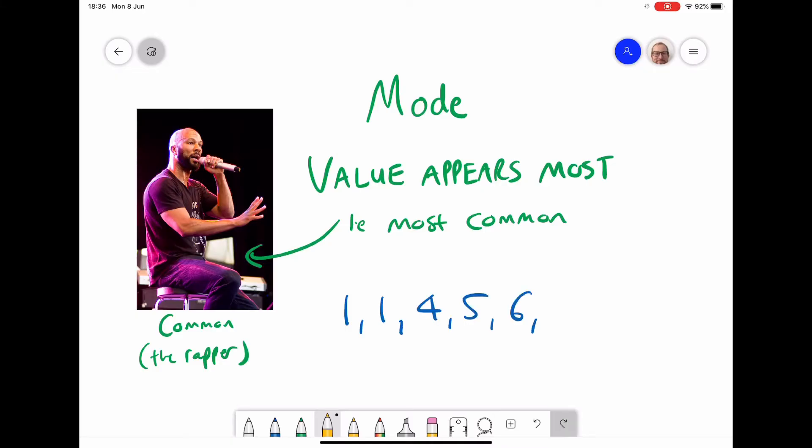So in this data set here, I've got a list of numbers and I've put them from the smallest to the largest. I circled these because these are the only numbers that appear twice and everything else appears once, and therefore one equals the mode in this example.